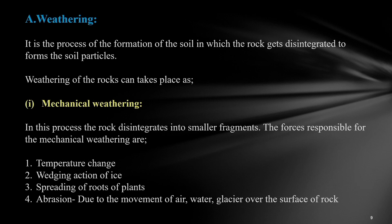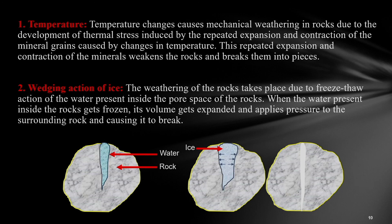In the weathering process, soil gets formed due to the breaking of rock into small particles, which can take place two ways — mechanical and chemical. In mechanical weathering, different mechanisms break the rock into small fragments. The forces responsible for mechanical weathering are: temperature change, wedging action of ice, spreading of roots of plants, and abrasion.